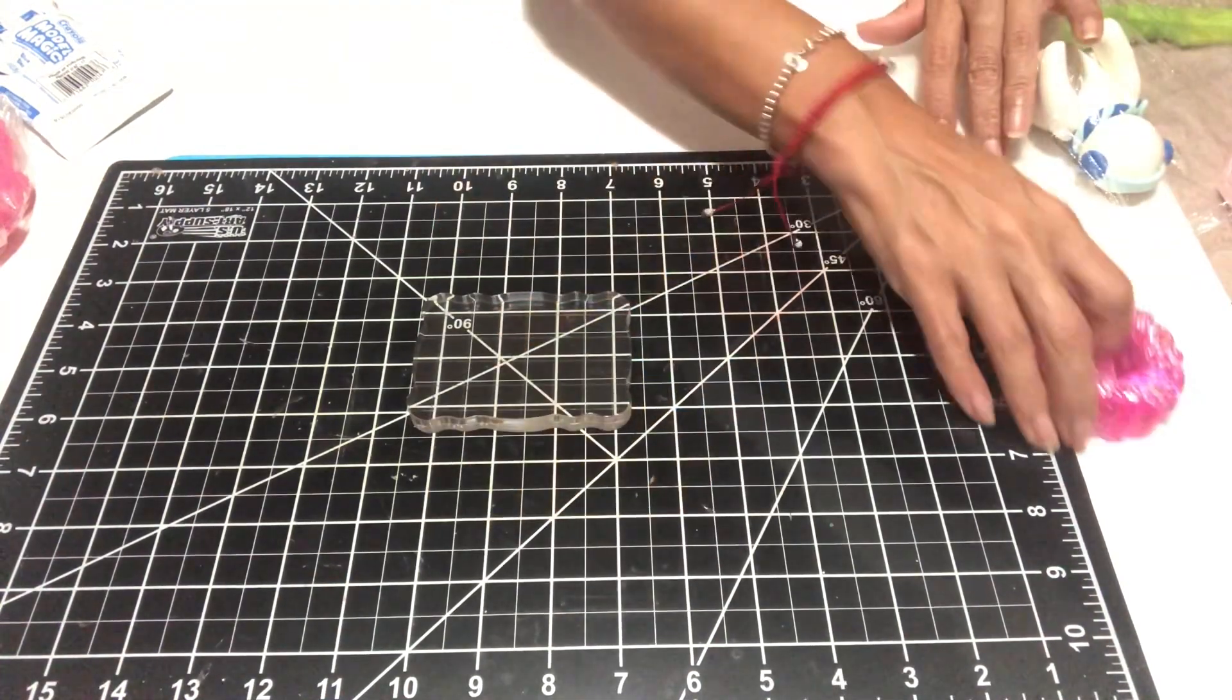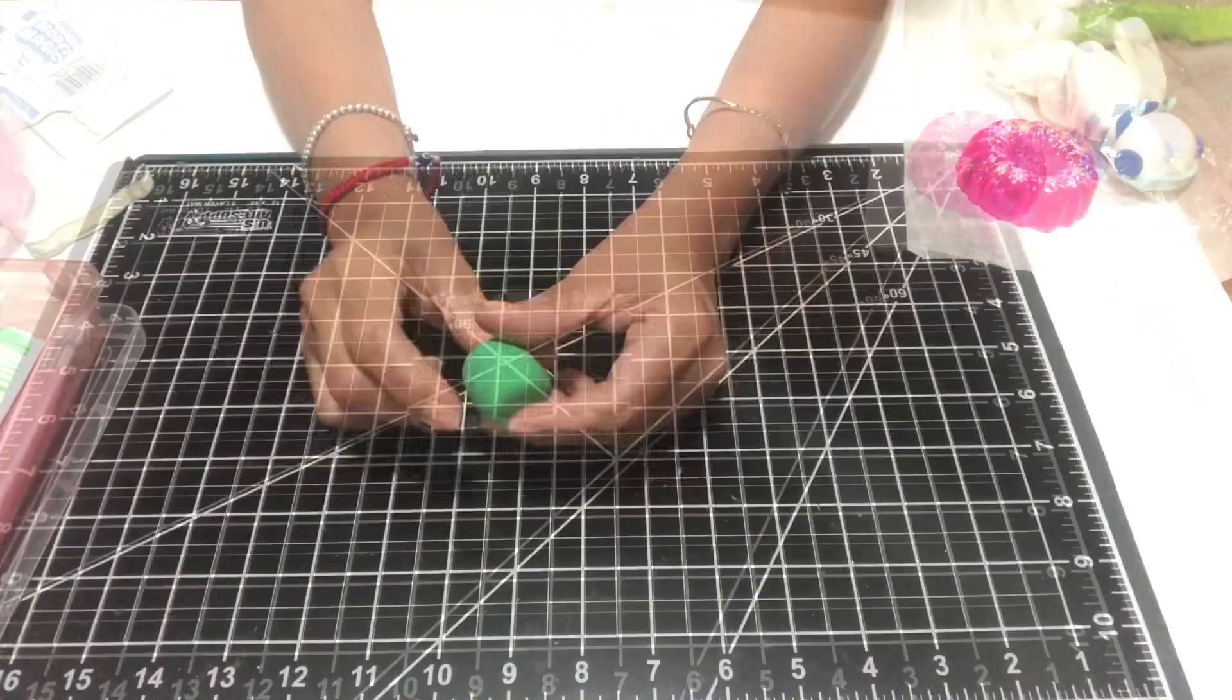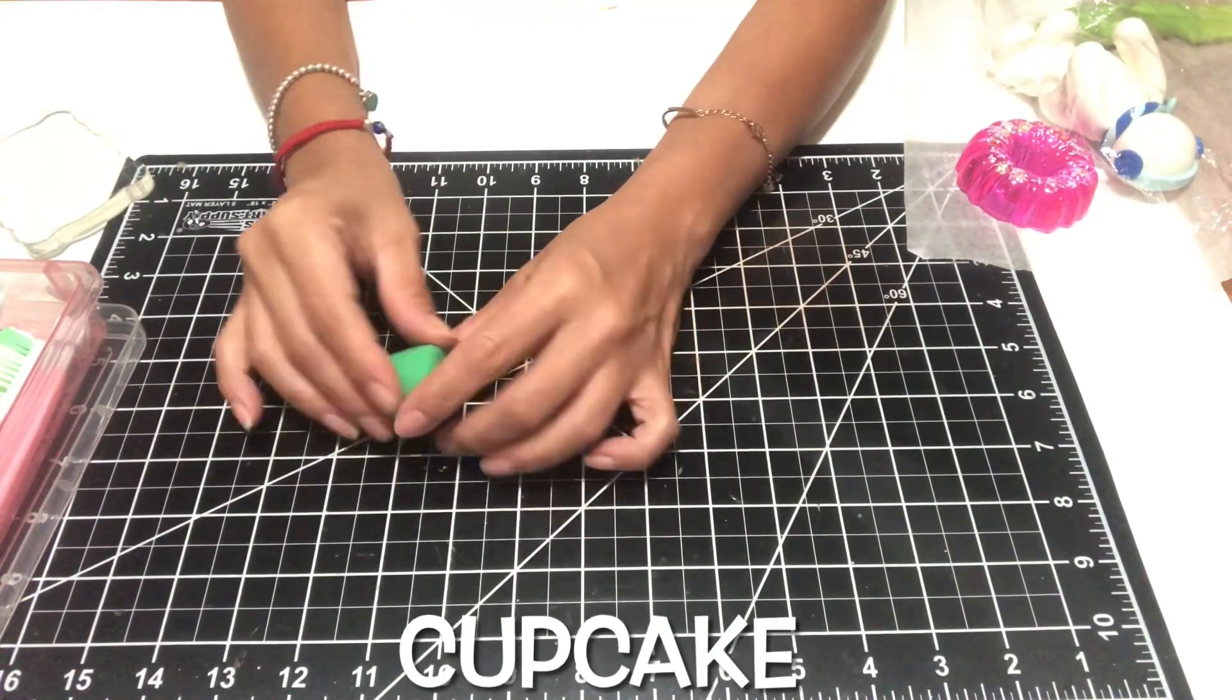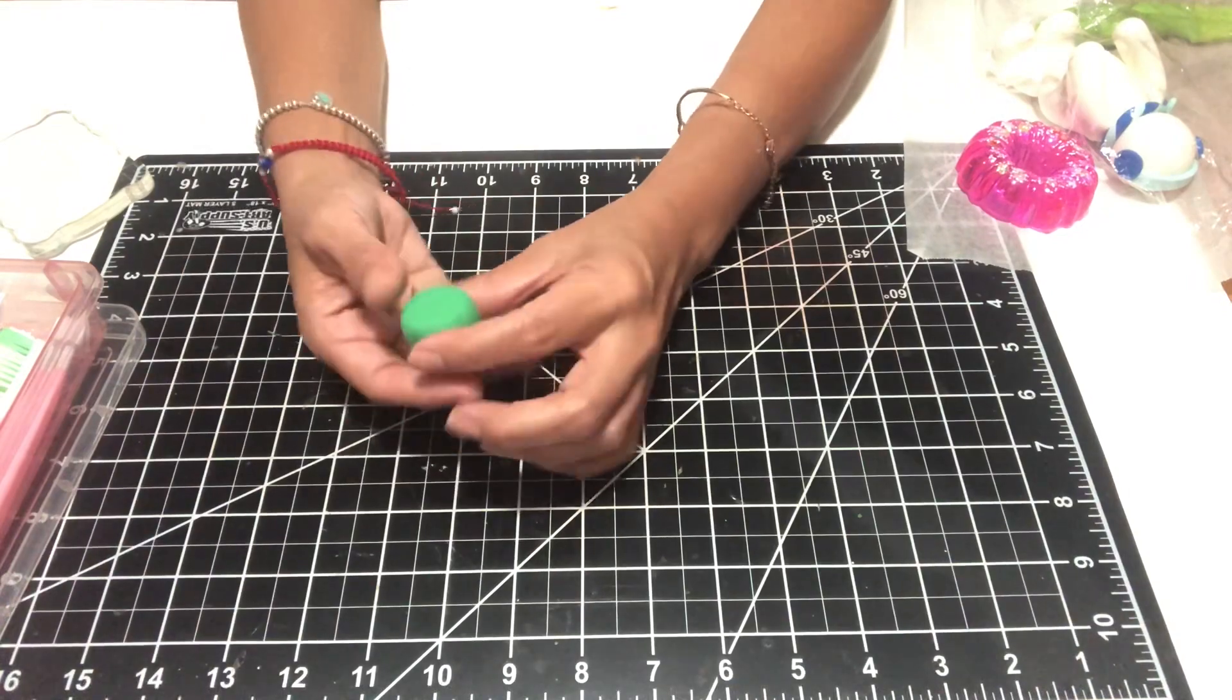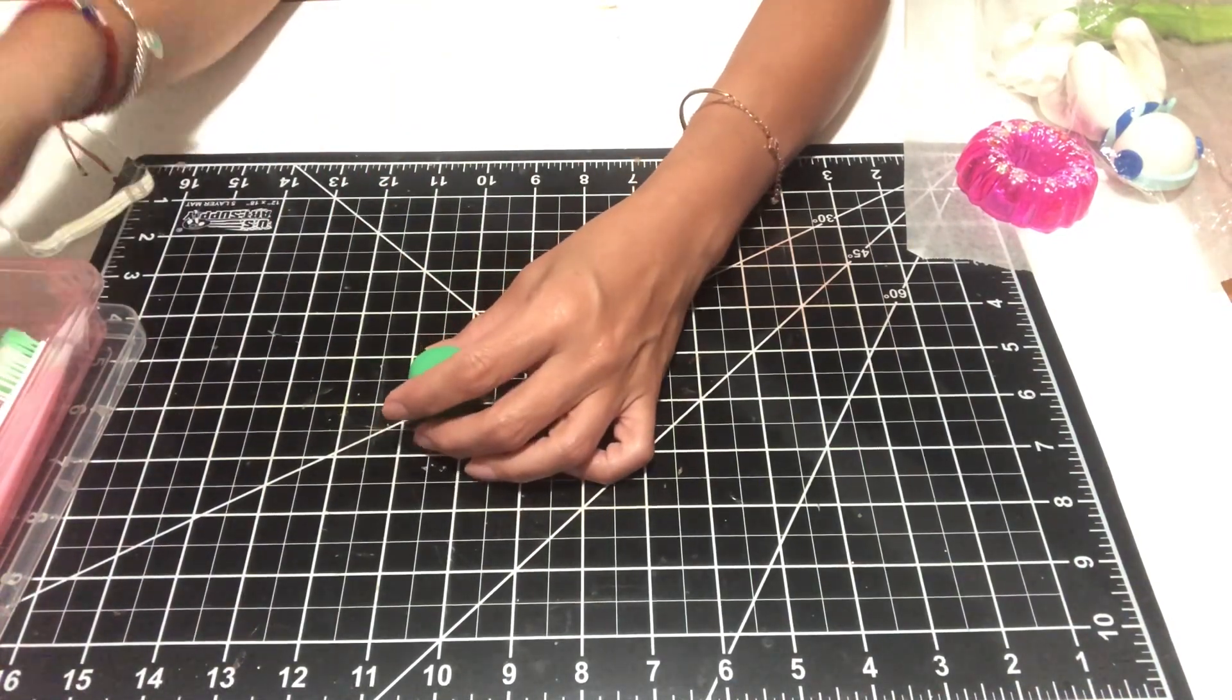Regarding the mouth, all I did was use one of my molding tools and just pressed a mark in there, which you will see. If you do not have one of those tools, you can just grab a straw, cut the tip of it, and that will give you that mouth shape.